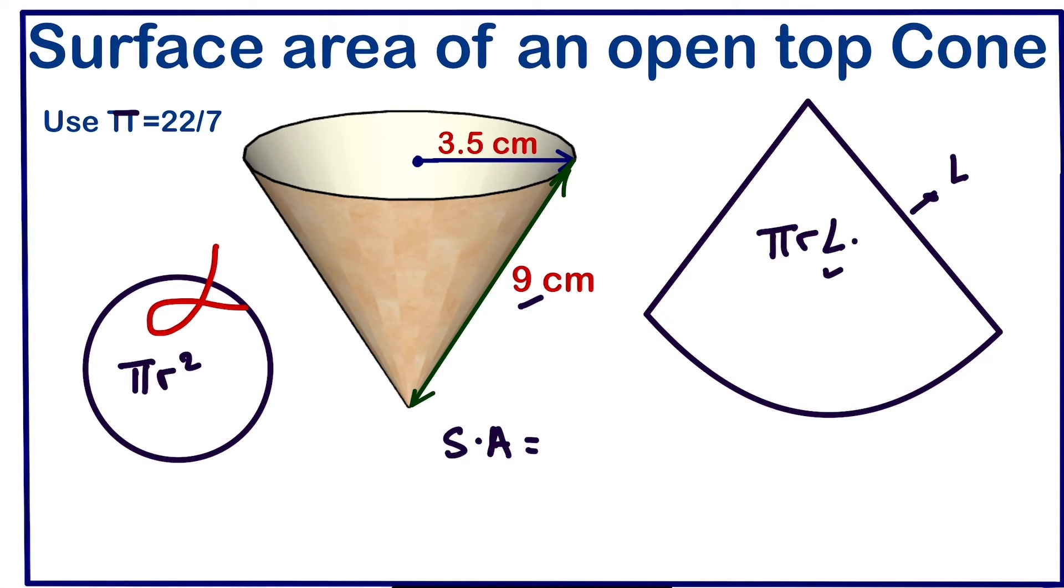If we substitute the value π, we can use 22 over 7, and the radius is 3.5, which is the same as 7 divided by 2, times the slant height which is 9.